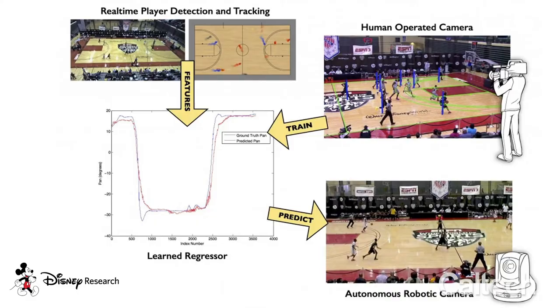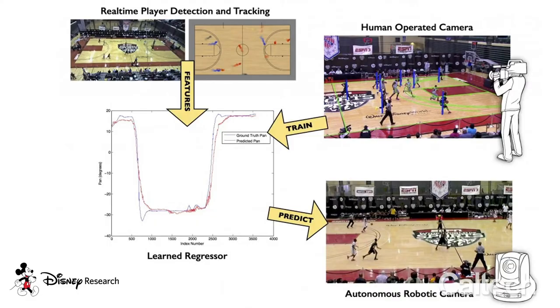Other applications I've worked on include automated broadcasting, where we want to train a neural net to automatically broadcast a sports game by imitating a human expert. We also want to guarantee that the deep learning neural net will behave in a way that's guaranteed to be smooth, because smoothness translates to comfort in the visual experience for viewers.